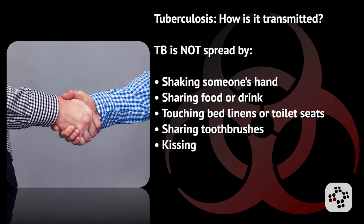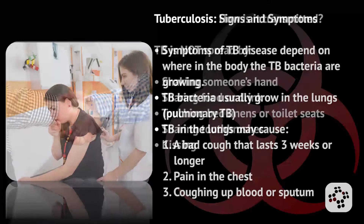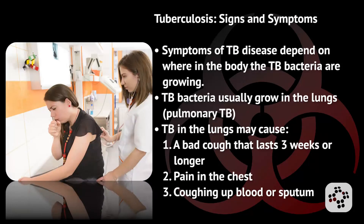It's important to remember that TB is not spread by shaking someone's hand, sharing food or drink, touching bed linens or toilet seats, sharing toothbrushes, or kissing. Now let's talk about the signs and symptoms of tuberculosis. Symptoms of TB disease depend on where in the body the TB bacteria are growing. TB bacteria usually grow in the lungs, known as pulmonary TB.